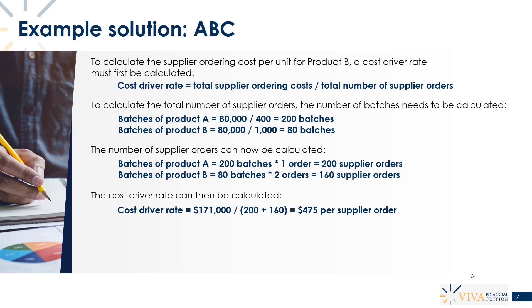Now we can work out our cost driver rate. We have total supplier ordering costs of $171,000 and 360 total supplier orders across both product lines. That works out to an average cost of $475 per supplier order — meaning on average it costs us $475 to place a supplier order.